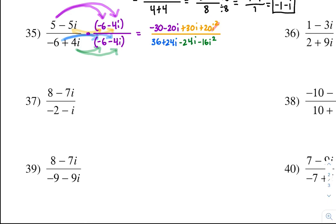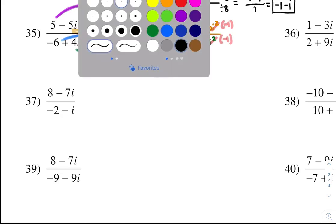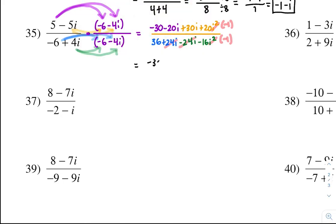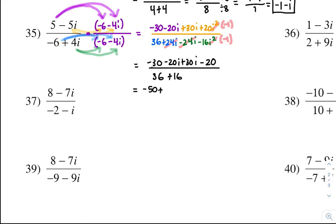The i squareds become negative 1, and the positive 24i and negative 24i cancel. So let's simplify: negative 30 minus 20i plus 30i, and negative 20 times negative 1 is negative 20. All over 36. Negative 16 times negative 1 is positive 16. On the top: negative 30 minus 20 is negative 50, and negative 20i plus 30i is positive 10i.